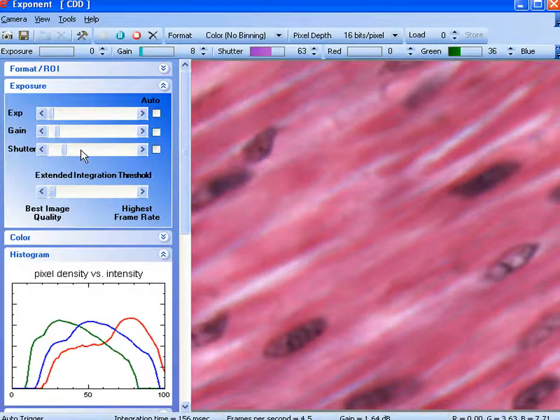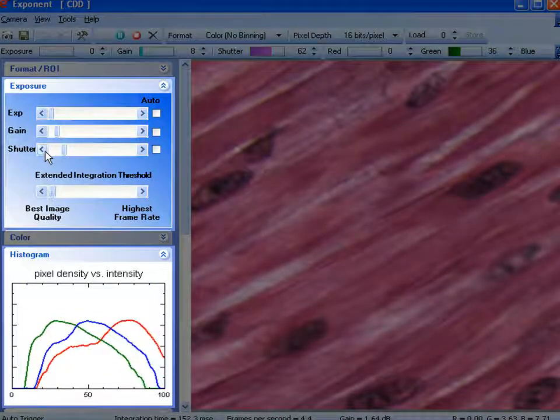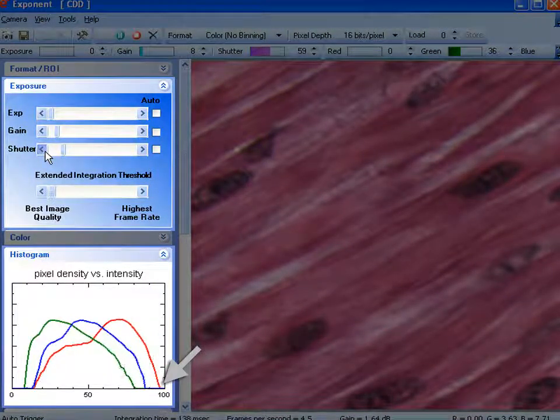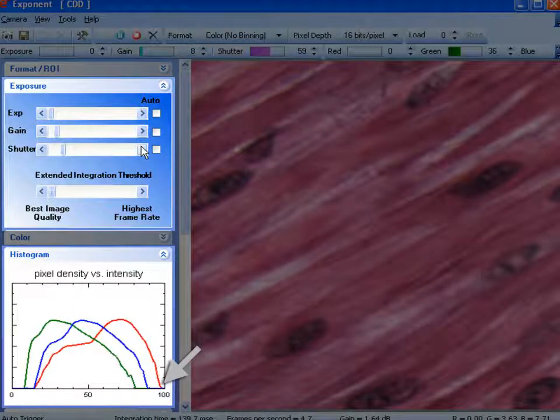Again, adjust exposure here using the shutter slider and adjust until red, green and blue lines extend to max values, but not extending beyond the maximum value for the x-axis.